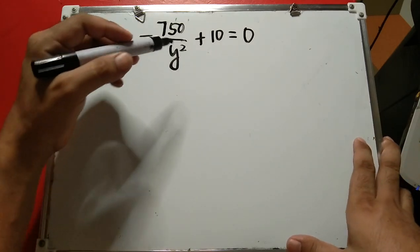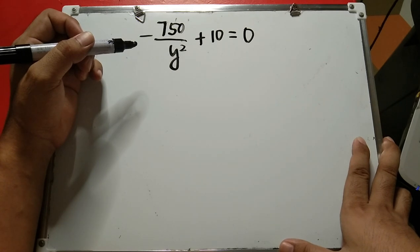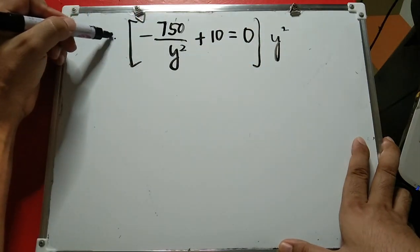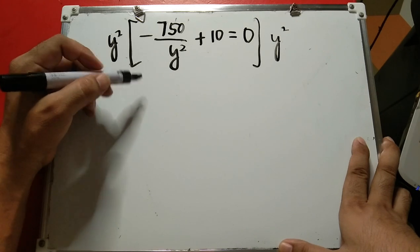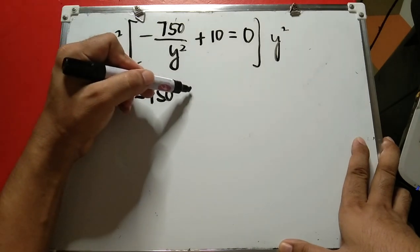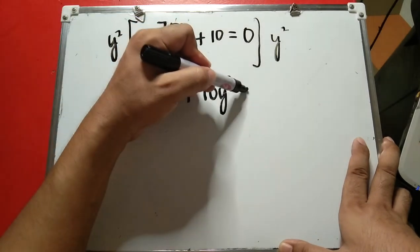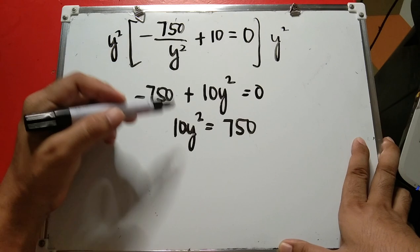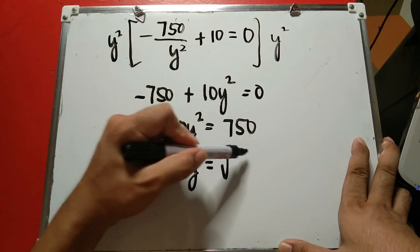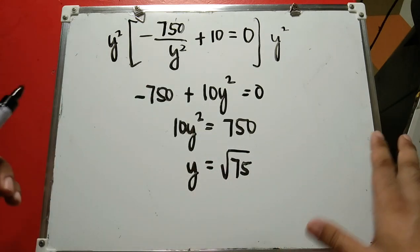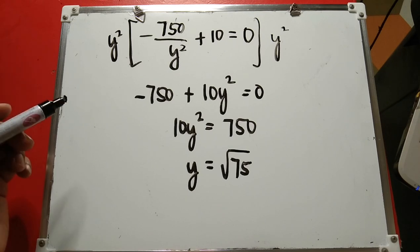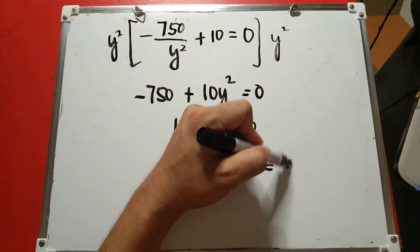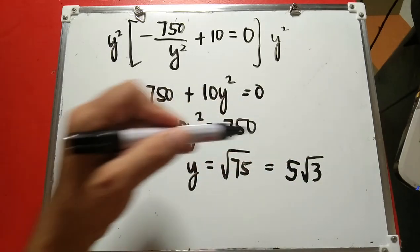So we have 10y squared equals 750. Divide both sides by 10 to get y squared equals 75, then take the square root of both sides: y equals the square root of 75, which simplifies to 5 times the square root of 3.